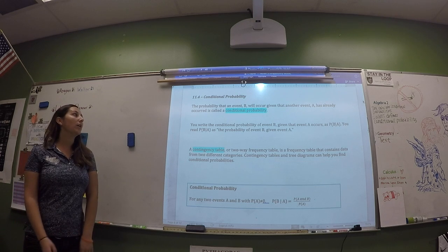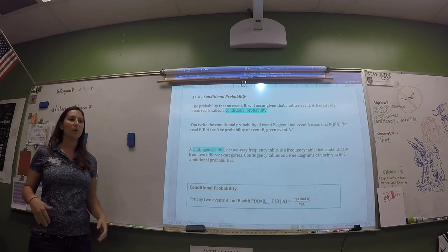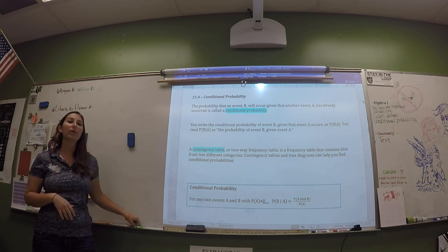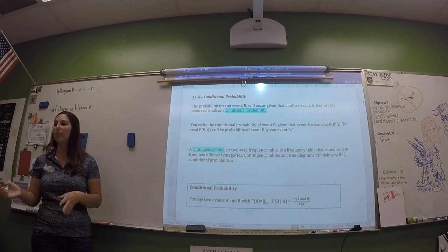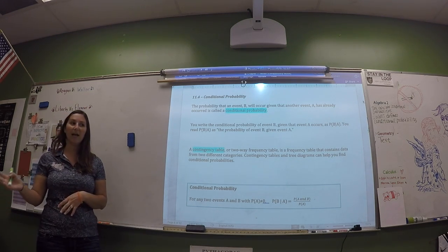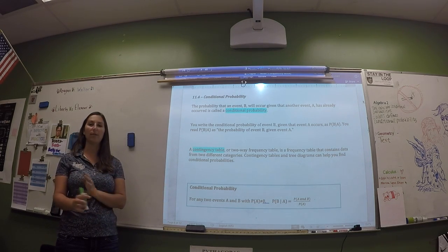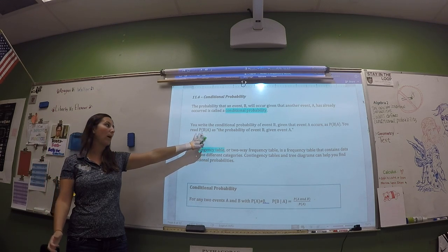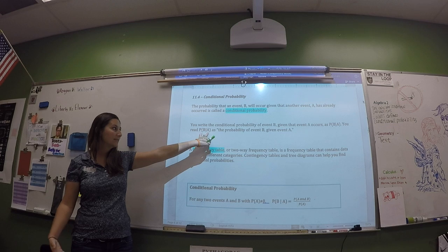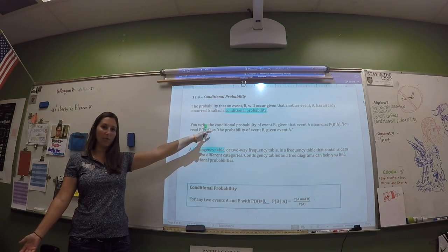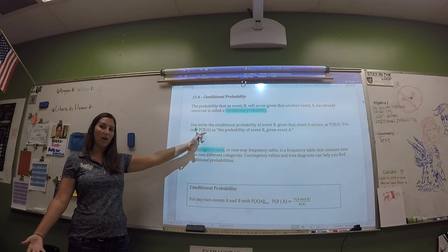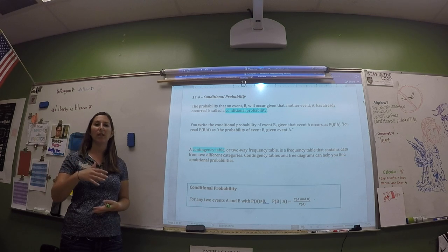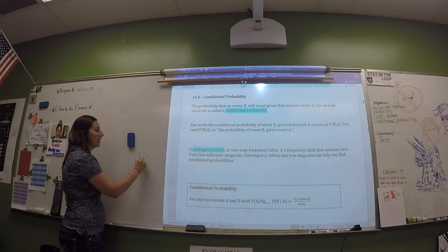We are doing some probability today, but it's a little different — it's called conditional probability. It's the probability of something happening given some other bit of information. For example, the probability of someone in this class being a girl given that she already has brown hair, or the probability of someone having brown hair given that she is a girl. The notation uses a vertical line: P(B|A) means the probability of B happening given that A has already happened. A contingency table is how we'll get our information — it's a table with numbers in it.